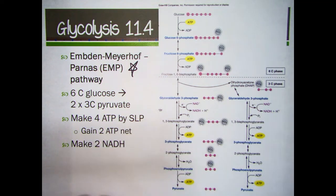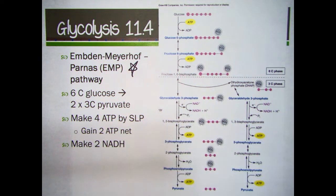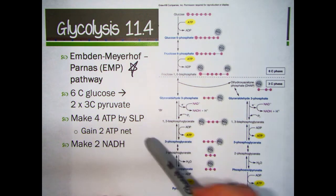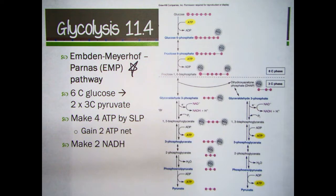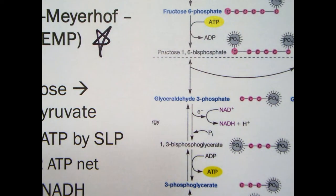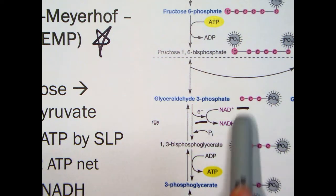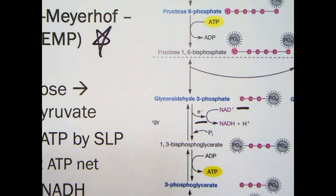Substrate level phosphorylation happens in the cytoplasm and is the transfer of a high energy phosphate not requiring ATP synthase. You will undoubtedly remember being told it's two ATP net. We do not care about the steps — do not memorize the steps. Also, in this process of bond breaking, electrons are released and those electrons are going to be captured. There always has to be some sort of electron recipient. So the electrons will go to NAD+, which carries two electrons, but since it starts with a plus, it just becomes NADH — not NADH2, just NADH.